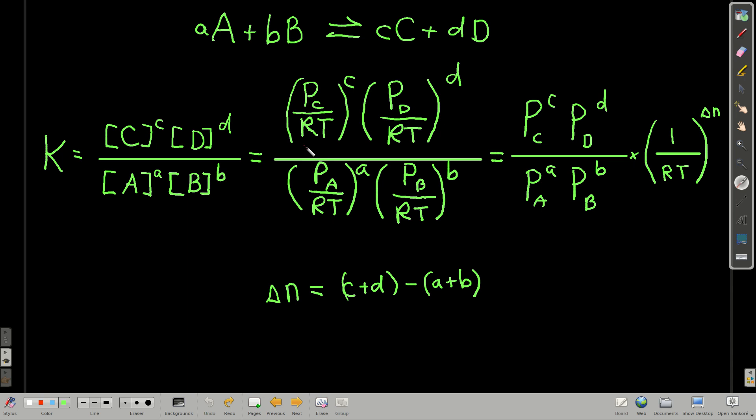And what we can do here is we can pull out the RT. So this is 1 over RT to the c, 1 over RT to the d, 1 over RT to the a, 1 over RT to the b. And it ends up we get the partial pressures each raised to the powers of their coefficients from the balanced equation, times 1 over RT to the delta n, where delta n is just c plus d minus a plus b.